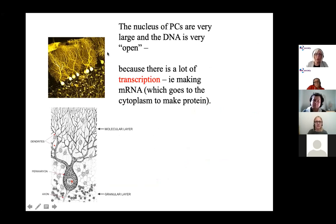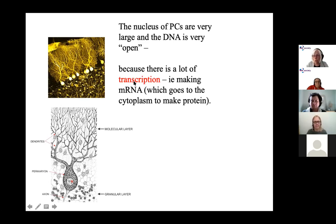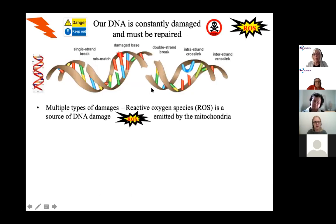These are Purkinje cells. Remember, it's the cerebellum in the brain which is deteriorating in A-T individuals. These are the big large cells with all these branching structures. Importantly, they're very large cells and particularly the nucleus is very large because the DNA is open — it's doing a lot of transcription. A critical thing about Purkinje cells is they're very transcriptionally active.